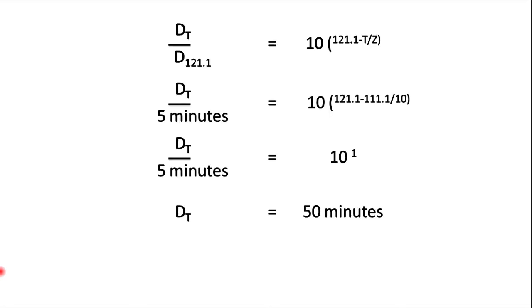You can write this as DT divided by 5 minutes equals 10 to the power (121.1 minus 111.1) divided by the Z value of 10. So finally you can see DT equals 50 minutes.